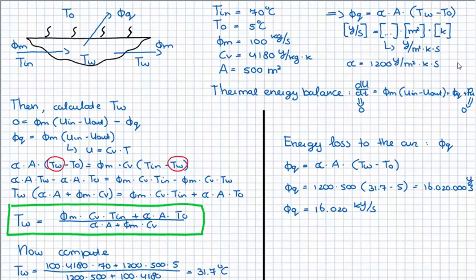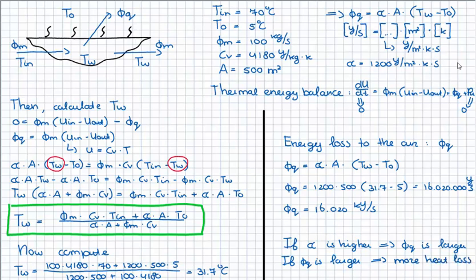Then the question was: what if alpha were a higher number — what happens to the bath? If alpha is higher, Vq is larger, meaning more heat is flowing out of the bath into the air, so we have more heat loss. More heat loss results in a cooler bath. So if alpha is higher, the bath will cool. Thank you for listening, and I hope this has helped you so you can go on with the next set of questions.